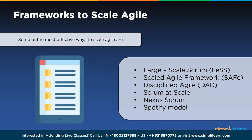Disciplined Agile Delivery (DAD) is the software development portion of the Disciplined Agile toolkit, enabling teams to make simplified process decisions around incremental and iterative solution delivery, building on practices from scrum, agile modeling, lean software development, and others. Scrum at Scale was created to efficiently coordinate ecosystems of multiple teams, achieving this through a minimum viable bureaucracy via scale-free architecture. Nexus Scrum consists of multiple cross-functional scrum teams working together to deliver a potentially releasable integrated increment at least by the end of each sprint, with teams self-organizing based on dependencies.